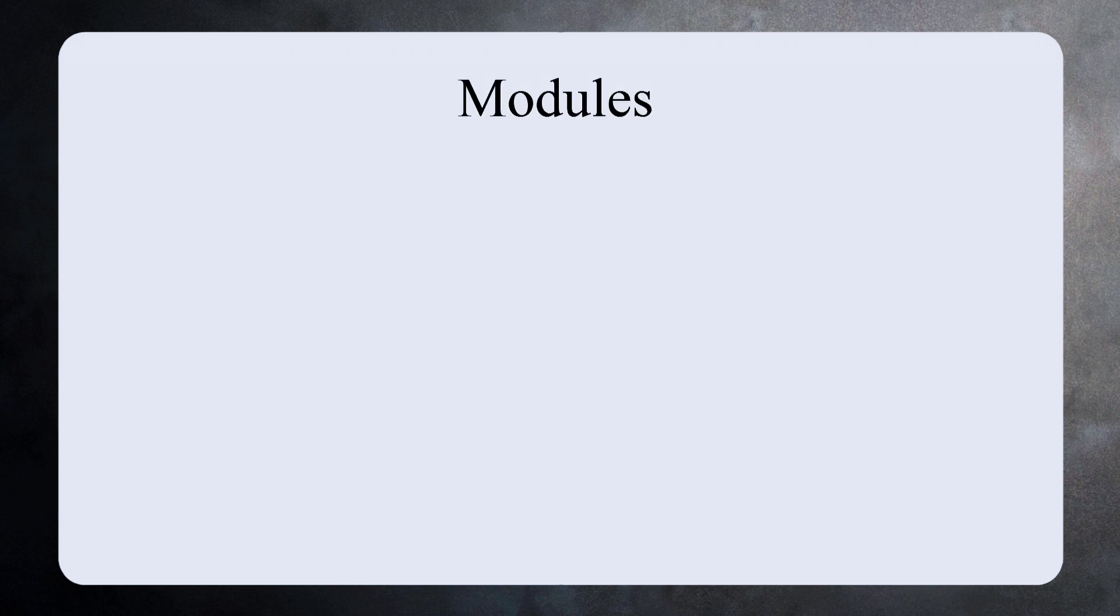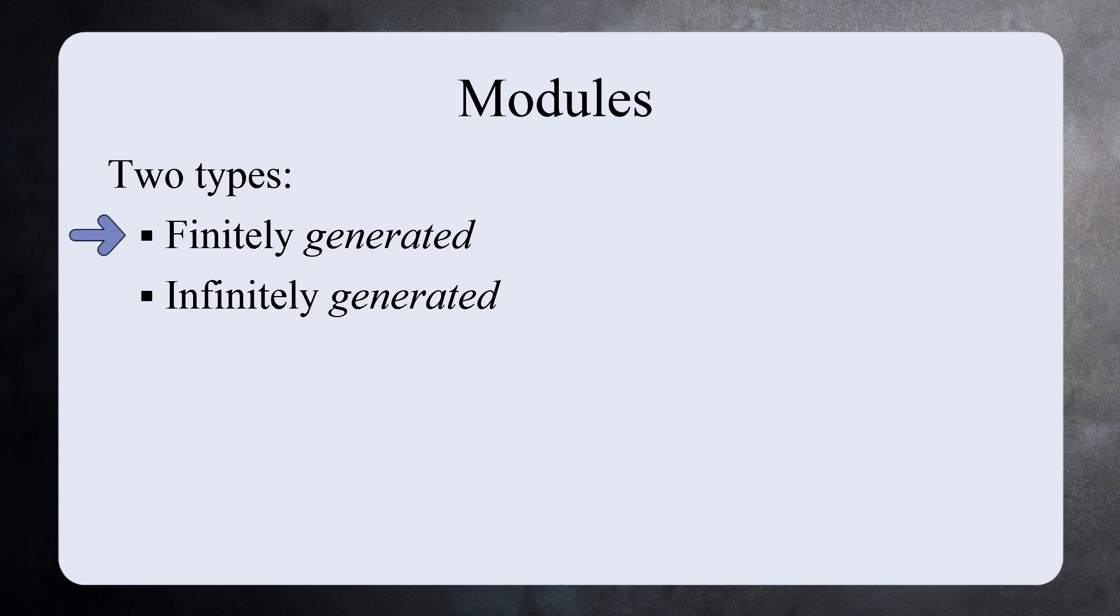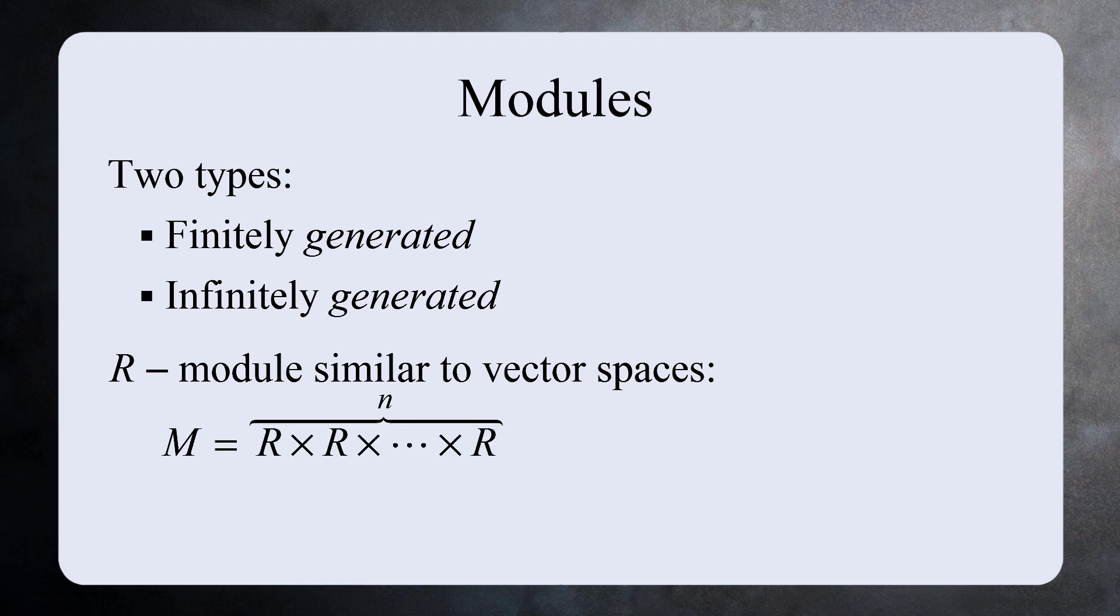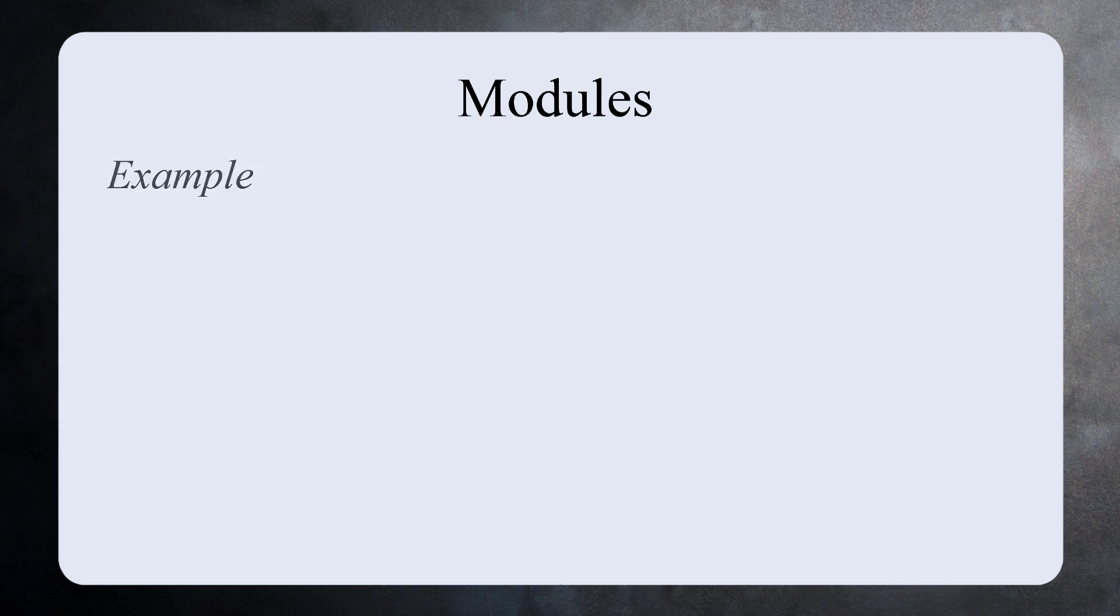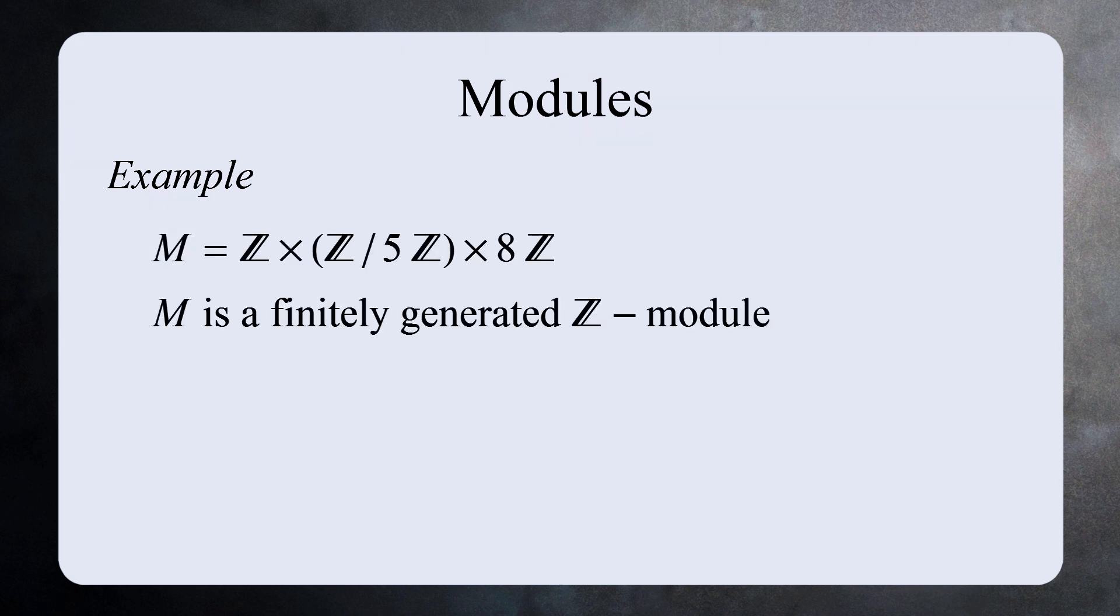For modules, things are more complex. Instead of talking about finite dimensional spaces, we talk about finitely generated modules. You can make a module that's similar to a vector space, a module that's N copies of the ring R. We call this a free module because it's free of the constraints and complexities of other modules. But you can also make modules that are finitely generated and are not simply copies of R. For example, the direct product of Z, Z mod 5, and the multiples of 8 is a finitely generated Z module, and it's not 3 copies of Z. It's not a free module. This module departs from the simplicity of vector spaces.